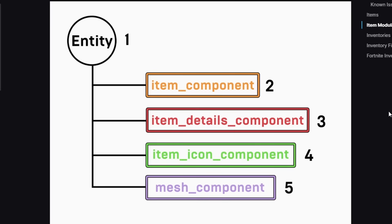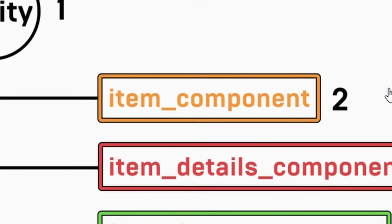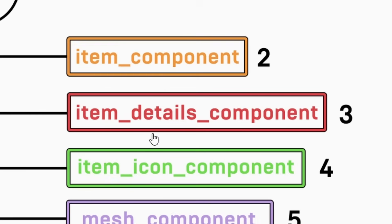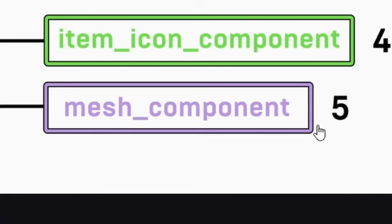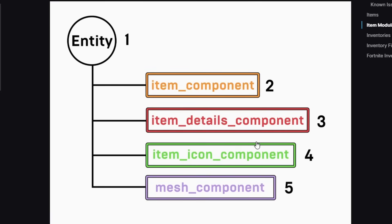For example, if you want to make an item you need an entity and then include different kinds of components. An item component makes it an item. Item details gives it a title and description. Item icon gives it the icon so it displays in your inventory. And the mesh component is what it looks like when it's dropped — right now it's only dropped, but I'd guess in the future they'll add holding as well.